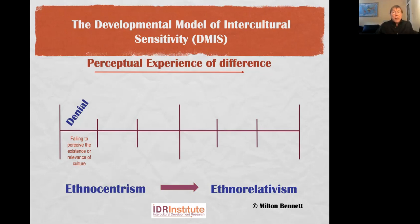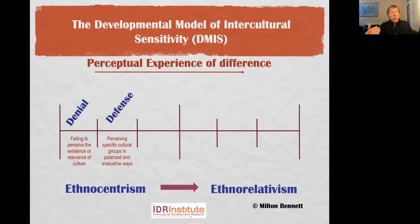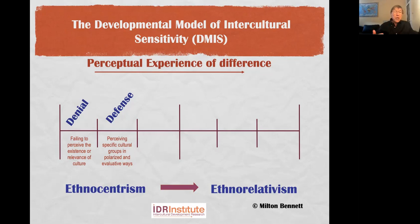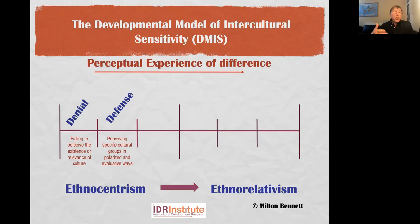If people at denial are pushed into contact with others — which frequently occurs in our increasingly multicultural societies and the global village — that moves into defense. Defense is perceiving specific cultural groups in polarized or evaluative ways: essentially us and them, where us are the good guys and them are the bad guys. But sometimes it's reversed so that us are the bad guys and them the good guys — sometimes called internalized colonialism or internalized sexism. The underlying idea remains the same: maintaining an us-and-them distinction. We see others in more stereotypical terms and ourselves in generally richer or more complex terms.